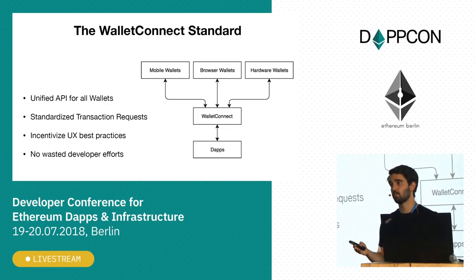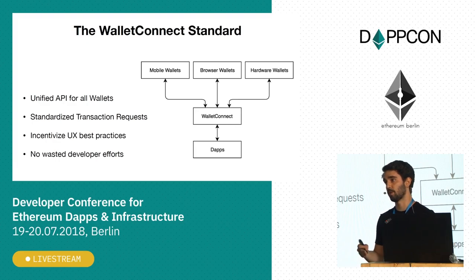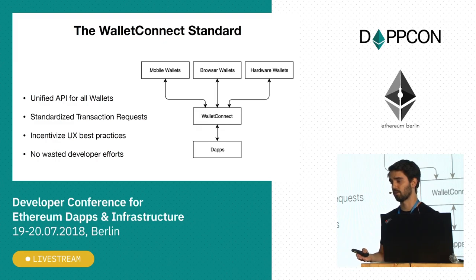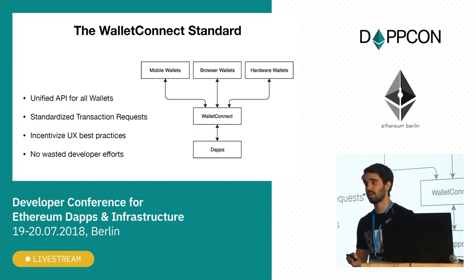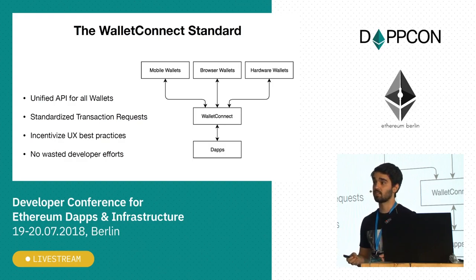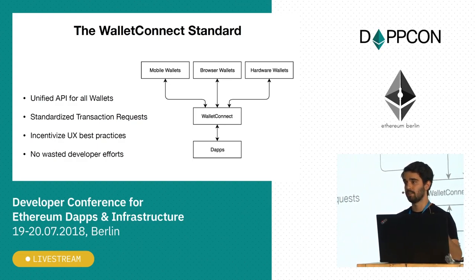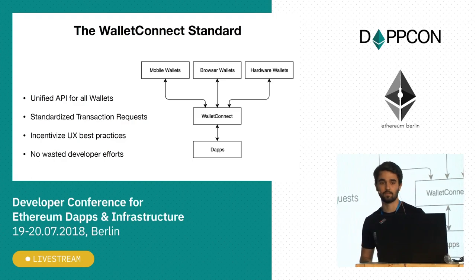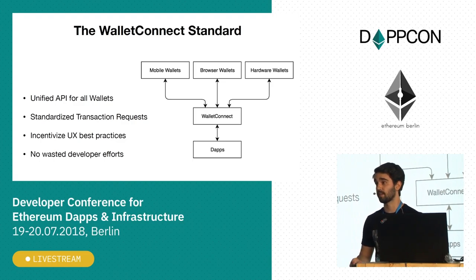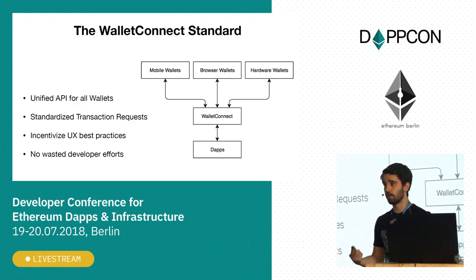We're also thinking about standardizing transaction requests and moving away from raw transactions. We're exploring how to improve the information wallets receive, because currently MetaMask doesn't display much of the information included in a transaction. With signed typed data for messages we've made progress, but we still don't have a way to know a transaction's intent when approving — you're essentially trusting that the dApp gave you the right transaction. The goal is no wasted developer effort; we want to provide utility, not spend time integrating every new wallet that comes along.